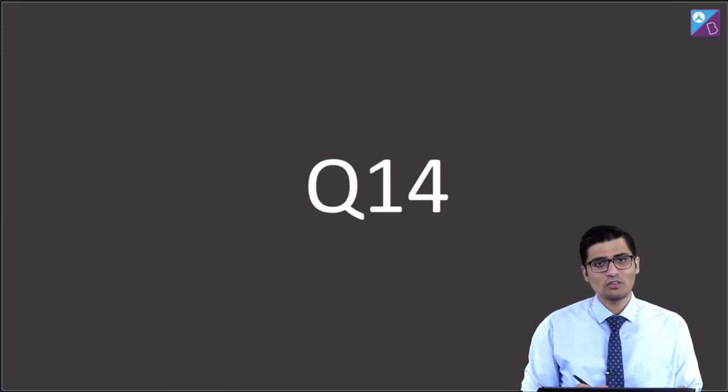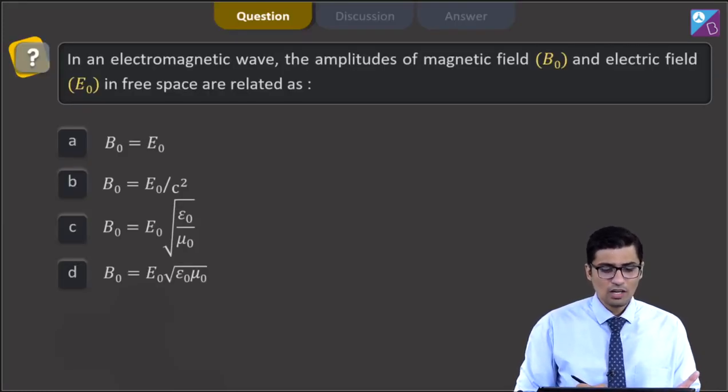This is question 14. The question says in an electromagnetic wave, the amplitudes of magnetic field B0 and electric field E0 in free space are related as: B0 is equal to E0, B0 is equal to E0 by C squared,